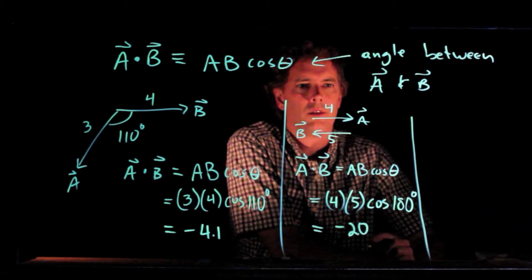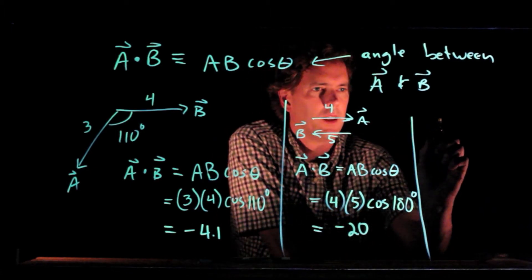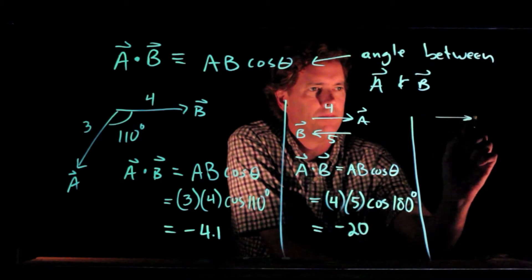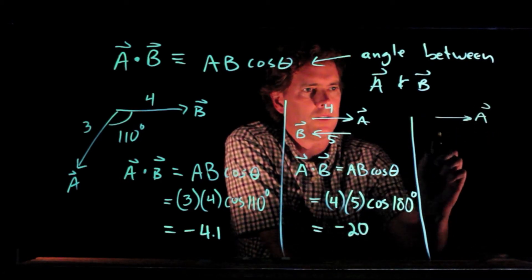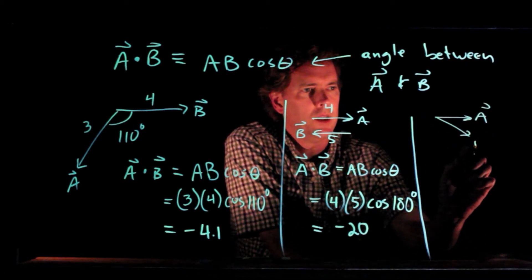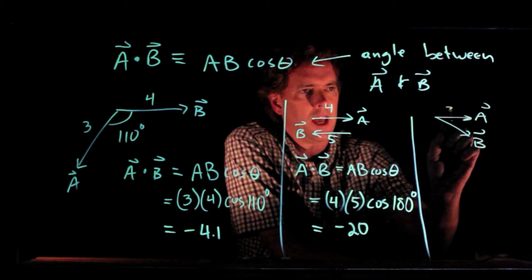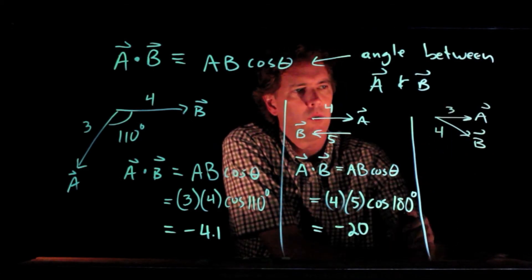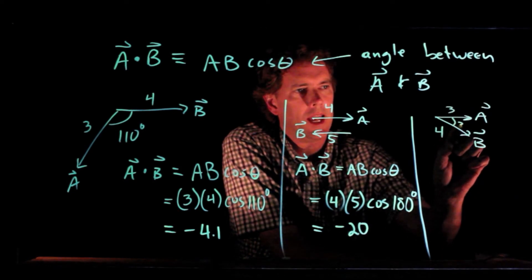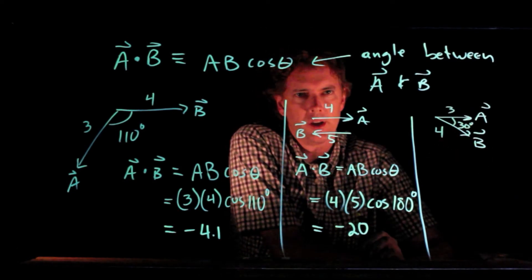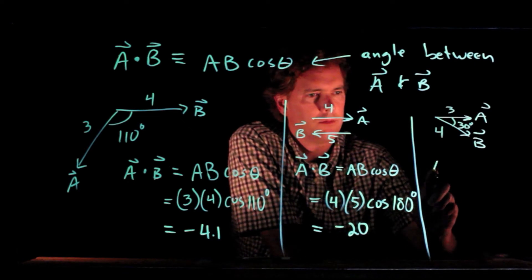Let's try one more relatively simple example. Let's say we have A pointing to the right and B pointing down. And let's say that A is 3, B is 4, and let's say that angle between them is 30 degrees. Alright, no problem.